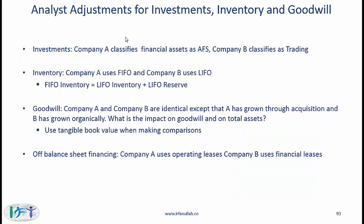As an analyst, when you compare different companies you have to make adjustments because different companies might use different accounting standards or make different assumptions. For example, if company A classifies financial assets as available-for-sale and company B classifies them as trading, they will have different net income impacts. Company A will show any gain or loss in OCI, while company B will show the unrealized gain or loss in net income. If they are similar in all other respects, you must make an adjustment before comparing.